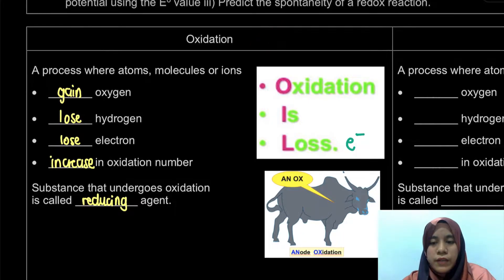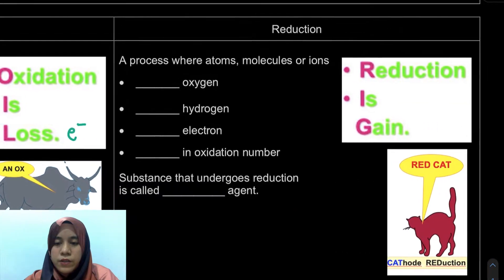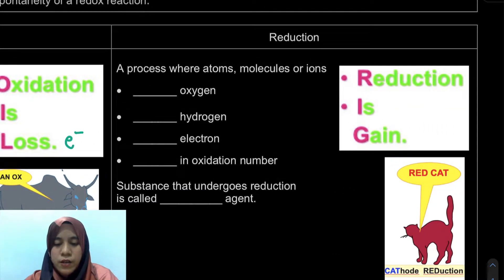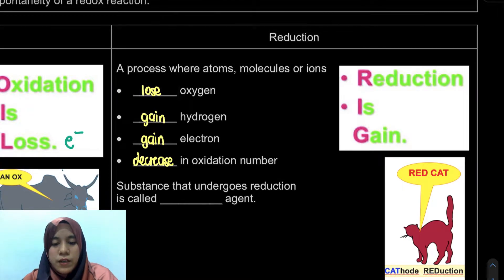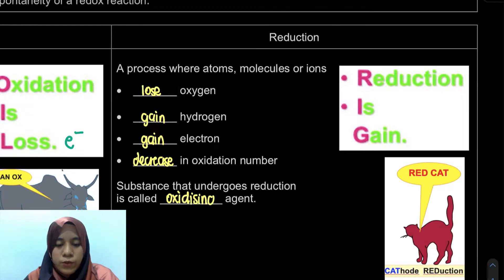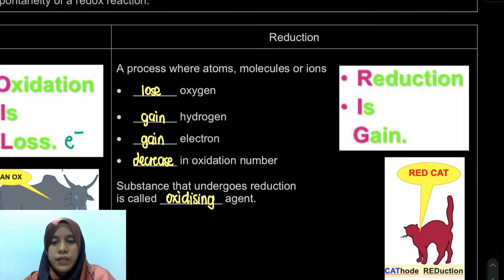Now we're going to look at reduction, which is the complete opposite of oxidation. Reduction is a process where atoms, molecules, or ions will lose oxygen or gain hydrogen. It is also a process where the species will gain electrons and have a decrease in oxidation number. The species that undergoes reduction is called an oxidizing agent. The key definition to remember is: reduction means gaining electrons.